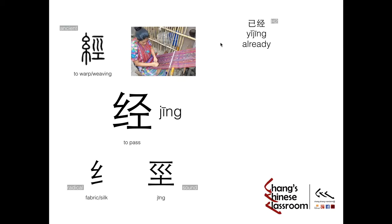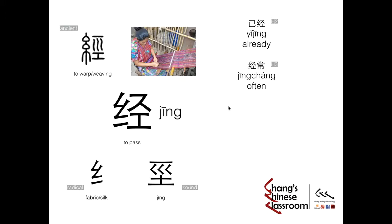Useful vocabulary: the first one in HSK level 2 is Yi Jing. Yi actually means already, and Jing means to pass — already passed, altogether still means already. And next: Jing Chang. Jing still means to pass, and Chang means frequently, so his action frequently appears. Jing Chang combined means often, or frequent, or frequently.